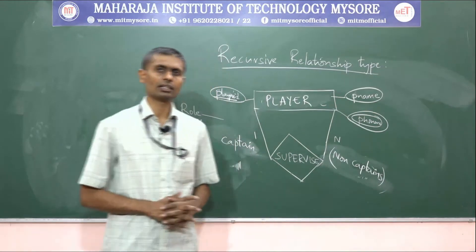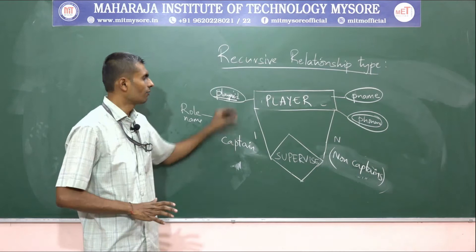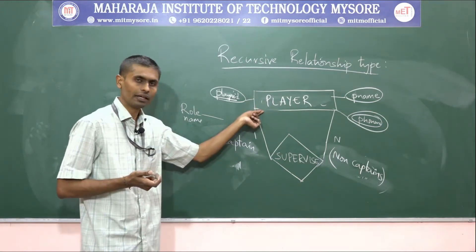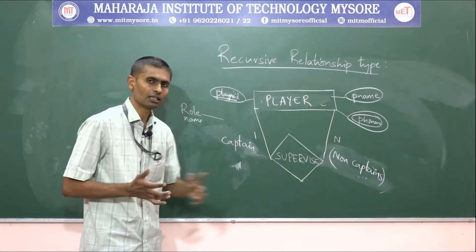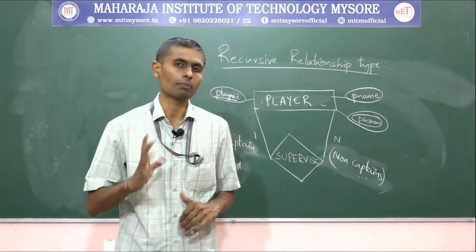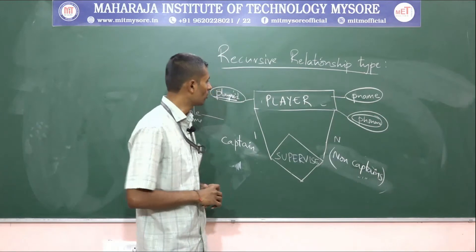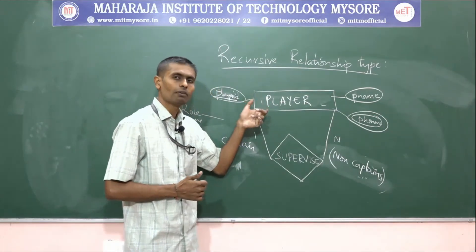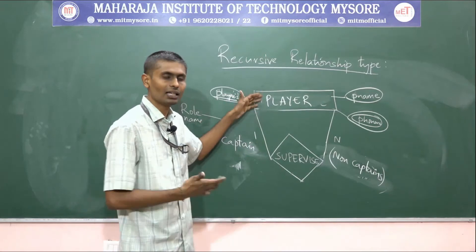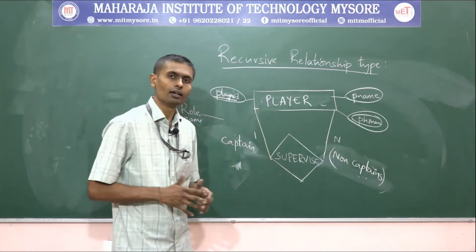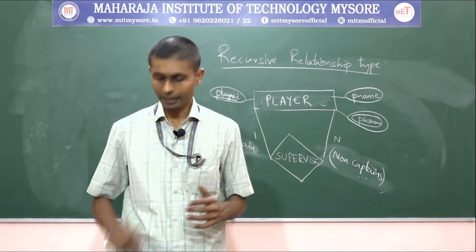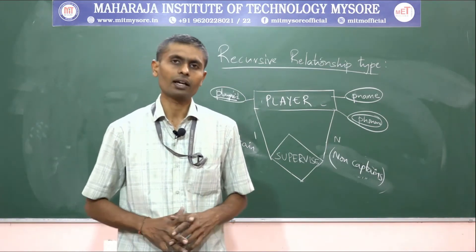One more interesting thing to highlight: for all entity types, we represent them with capitalized, uppercase letters. Similarly, relationship types are also represented with uppercase letters — this is the standard notation for designing an ER diagram. One more point: for entity types, we use nouns from English grammar, and for relationship types, we use verbs. Now I will take you on a tour of ER diagram design for a scenario.